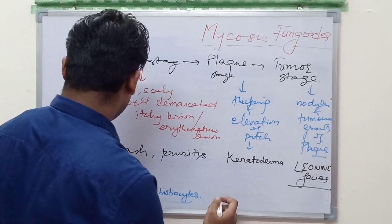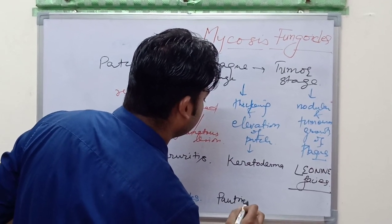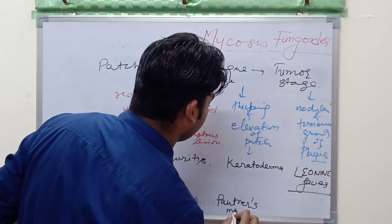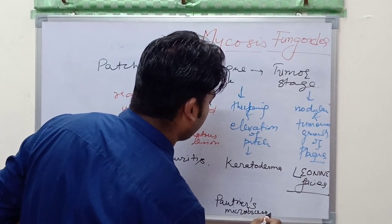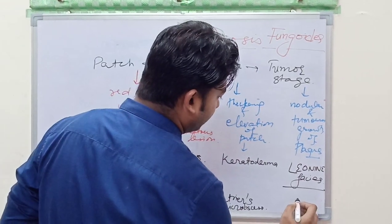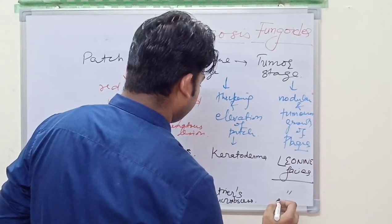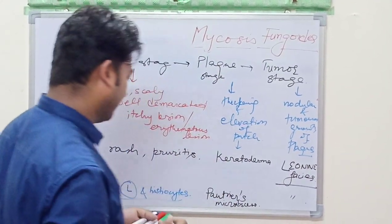In the plaque stage, Pautrier microabscesses are seen. In tumor stage, Pautrier microabscesses are seen along with atypical cells.